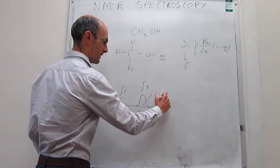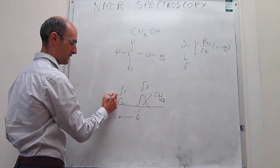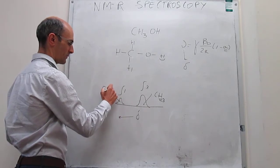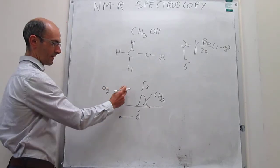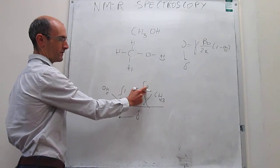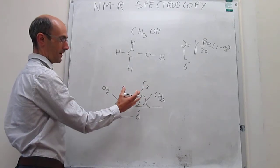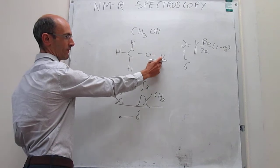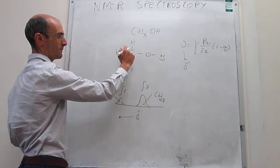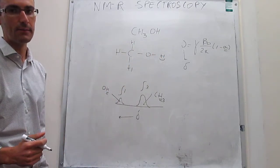So again, this is the signal due to the CH3 protons, and that is the signal due to the OH proton. And if you integrate under the curve, you actually have that this should be one to three, because it corresponds to just having one nucleus of one type and three nuclei of the other type.